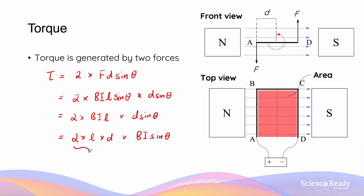The expression 2 × L × D is actually the area of the coils. The distance D in the equation is the distance between the midpoint of side AD or BC and the side of the coils. The length L is of course the length of AB or CD.